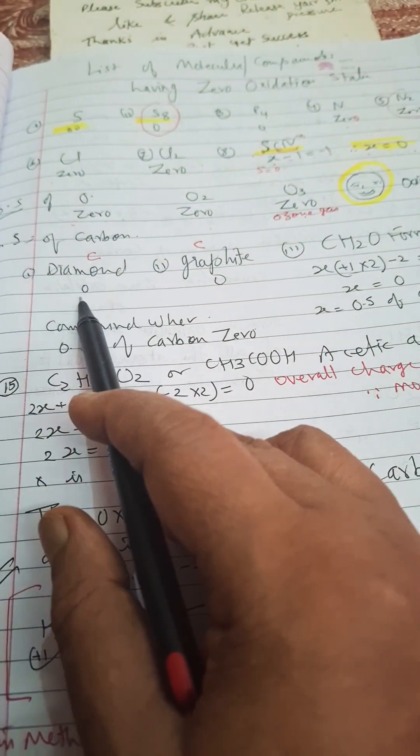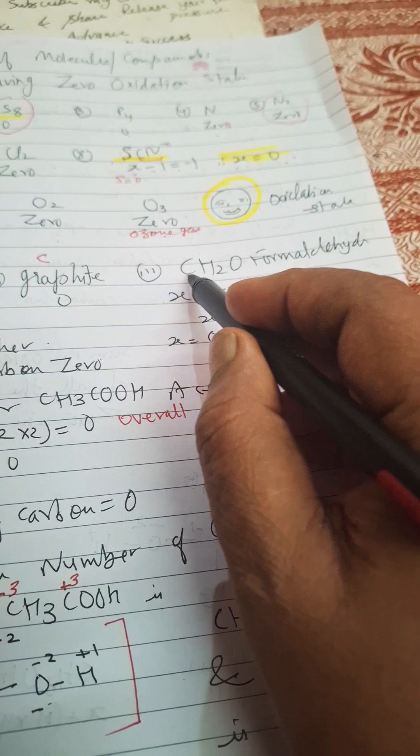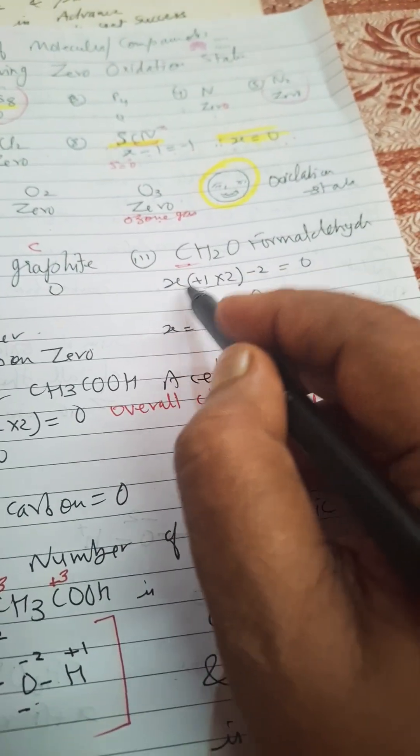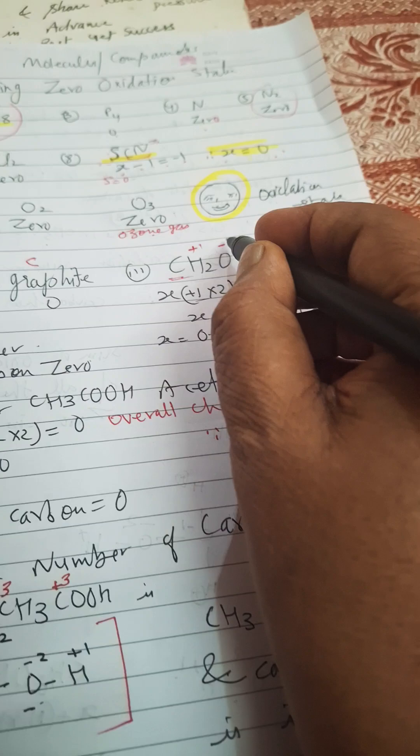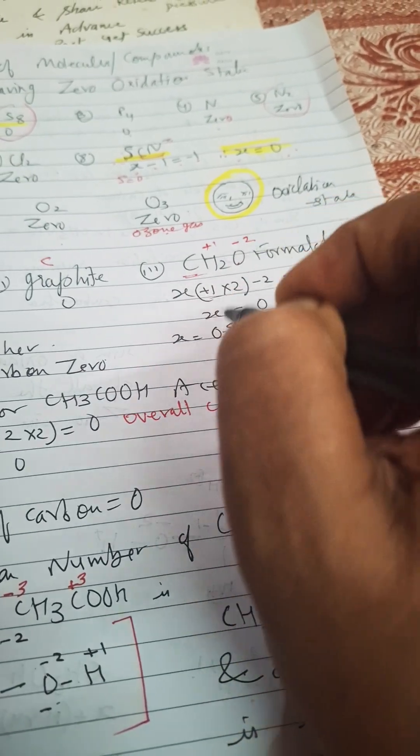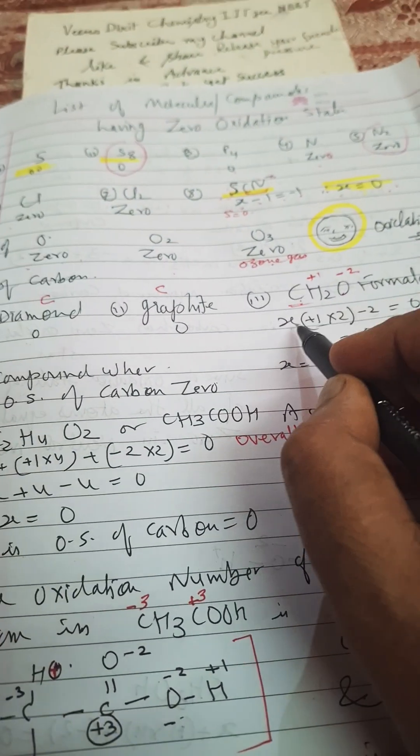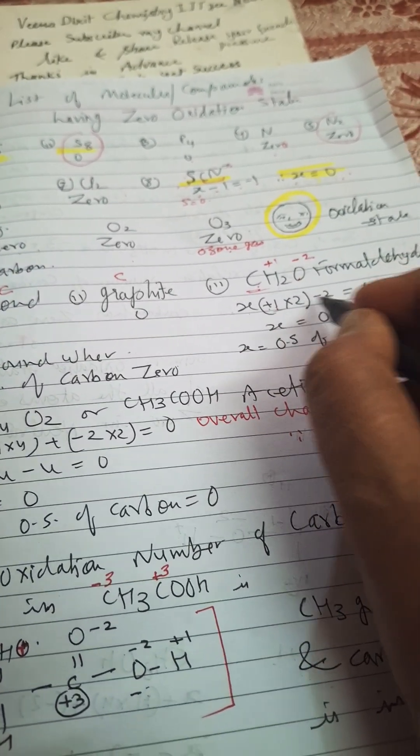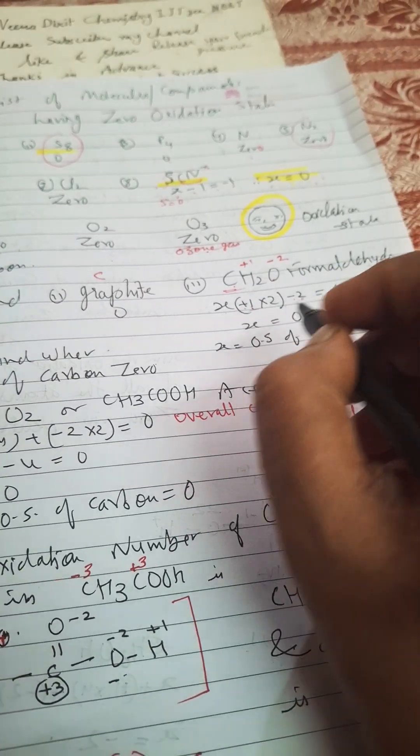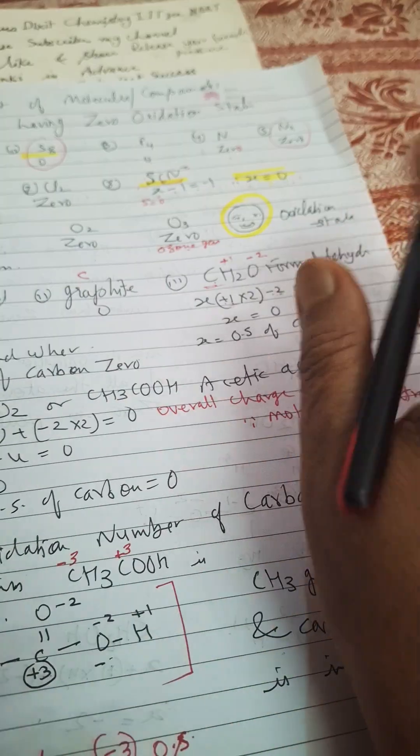Diamond carbon is zero, graphite is zero. Now in the case of CH₂O, carbon is having zero oxidation state. I told you that hydrogen is having plus one and oxygen is having minus two charge. So suppose carbon is having x, so x plus one two times, plus two times one minus two, so minus two. That is equal to zero, so plus two and minus two cancel, so x is equal to zero. So this carbon is having zero oxidation state.